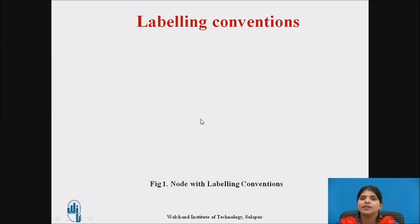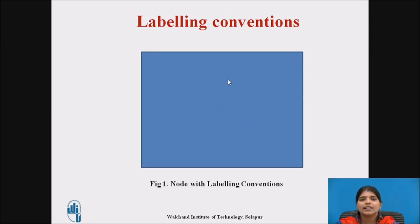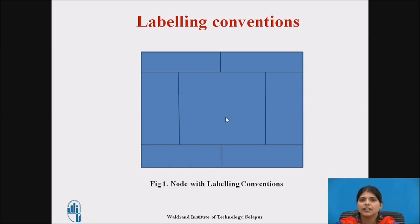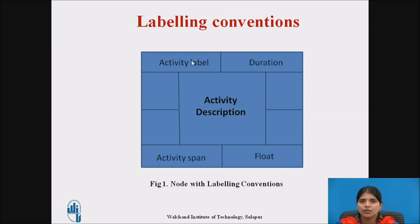First, take a rectangle. This rectangle is divided into two parts horizontally, and again these two parts are divided into two parts. The middle one is the activity description. The remaining parts are: activity label, duration, activity span, and float.